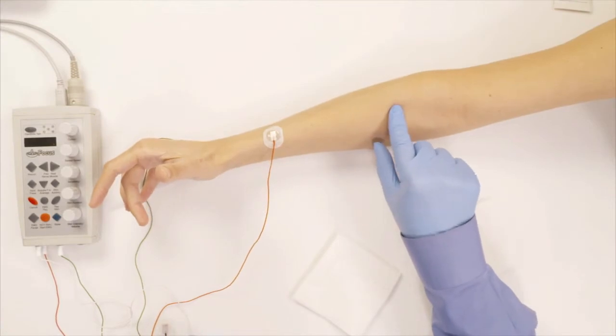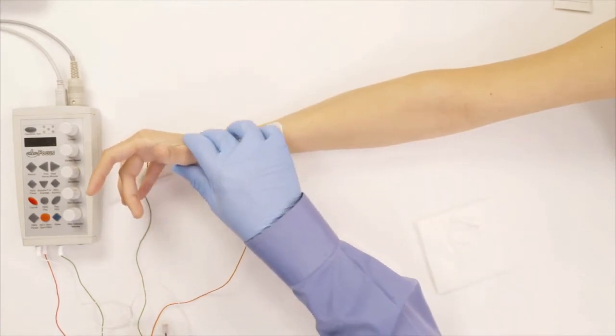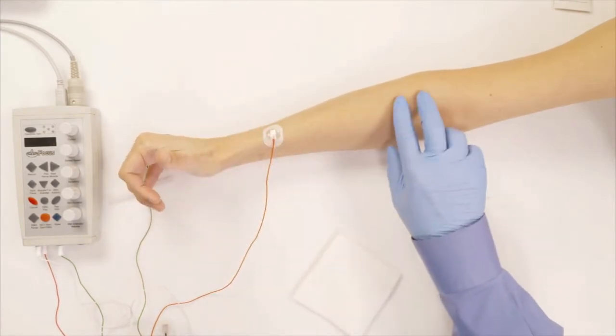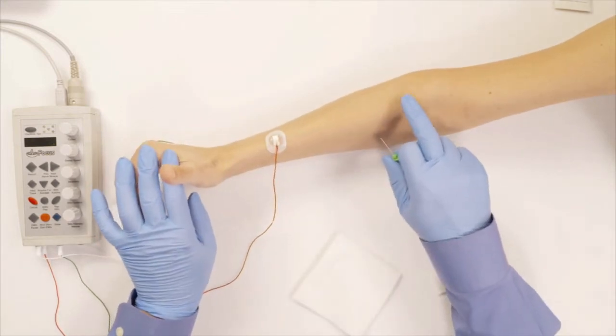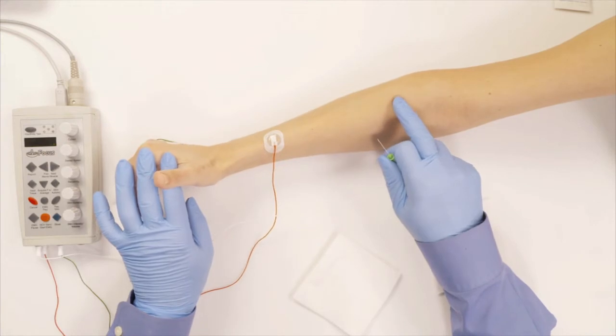The next muscle is the brachioradialis, and I usually ask the patient to put their thumb pointing to the ceiling. When they do, raise your arm up a little bit. I can see the muscle popping up right here, essentially.